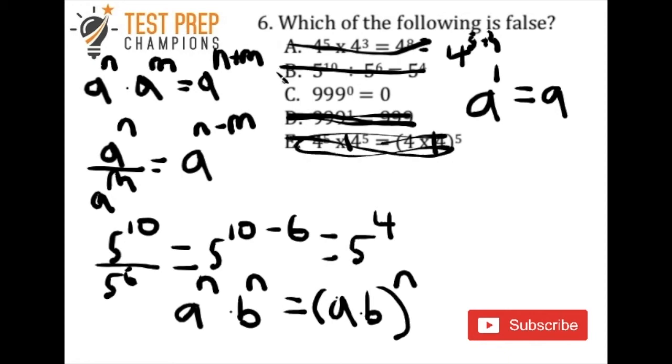And so hopefully it's been obvious that c is the false answer here. So c is the correct answer because it's false. So any number raised to the 0 power is just going to be equal to 1, not 0. So 999 raised to the 0 power is going to be equal to 1, not 0. So that's why that's false.